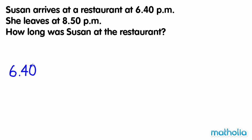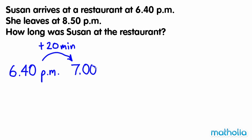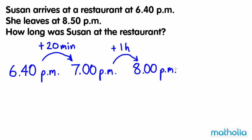Starting at 6:40 p.m., we can add 20 minutes to get to 7 p.m. From 7 p.m., we add 1 hour to get to 8 p.m. We know she leaves the restaurant at 8:50 p.m., so we need to add 50 more minutes.